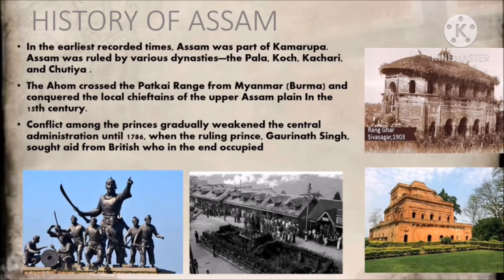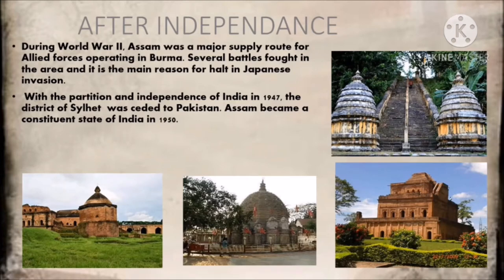History of Assam: Assam was part of Kamarupa, which was ruled by four dynasties — the Pala, the Koch, the Kachari and the Chutia — and there was constant warfare among them until the coming of the Ahom people in the 13th century. The Ahom people crossed the Patkai region from Myanmar and conquered the upper local chiefs of the Assam plains. In the 15th century, the Ahoms gave their name to the region and became the dominant power in upper Assam. Conflicts among princes gradually weakened the central administration until 1786 when the ruling prince Gaurinath Singh sought aid from Calcutta, the British stronghold, thus leading to Britain conquering Assam. During World War II, Assam was a major supply route for Allied forces operating in Burma. Several battles fought in the area in 1944 were decisive in halting the Japanese advance into India. With the partition and independence of India in 1947, the district of Sylhet was ceded to Pakistan. Assam became a constituent state of India in 1950. In 1961 to 1962, Chinese forces occupying a disputed area along the McMahon Line occupied a part of Assam.